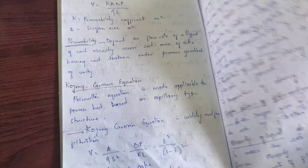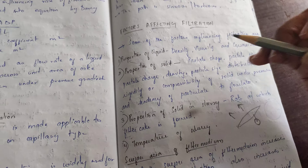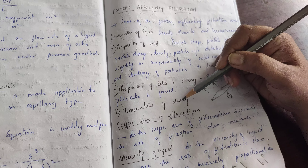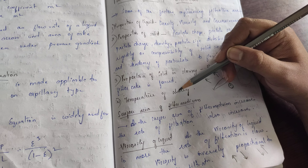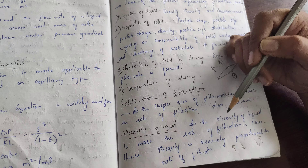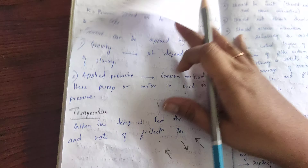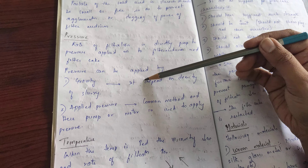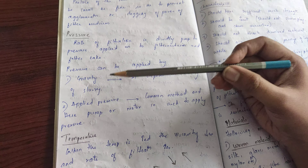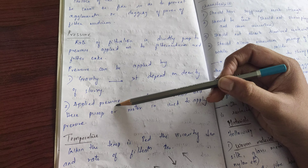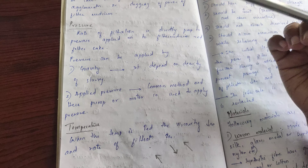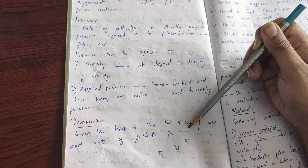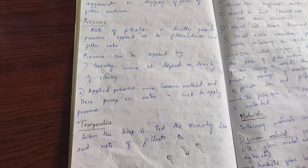In summary, the factors affecting filtration are: property of liquid, property of solid, proportion of solids in the slurry, temperature of slurry, surface area of filter medium, viscosity of liquid, particle size of solid, pressure (applied by gravity or pump), and temperature — where increased temperature decreases viscosity and increases the rate of filtration.